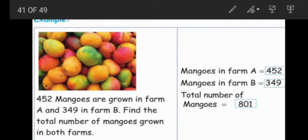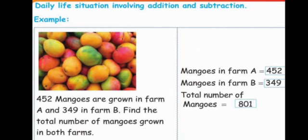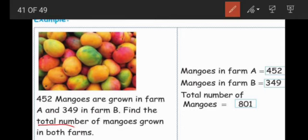Daily life situations involving addition and subtraction. In our daily life we use addition and subtraction — that is what we will see now. For example: 452 mangoes are grown in farm A and 349 in farm B. Find the total number of mangoes. You see the word 'total' — this word comes in addition. They ask total means we will do the addition. That is the keyword for these sums.